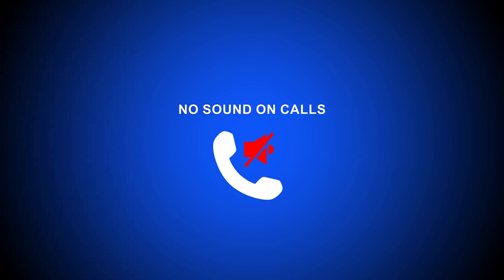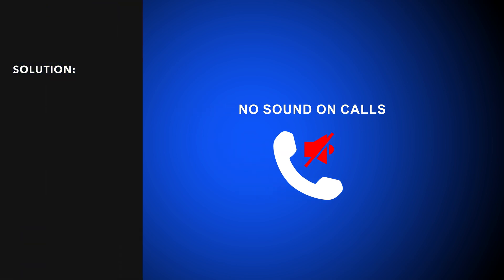Number five, no sound on calls when connected, which can be very puzzling. The solution is to turn off SIP ALG and check your codec settings.